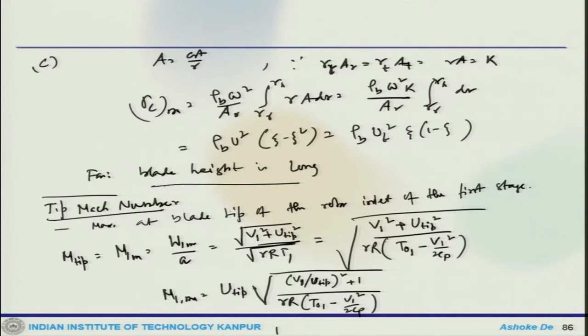For a transonic compressor, an acceptable value of tip Mach number would be around 1.3, while for the fan in turbofan engines a much higher Mach number is expected and allowed, typically 1.5 to 1.7. The challenging design goal is to increase the rotational speed U while keeping the tip Mach number within acceptable limits.